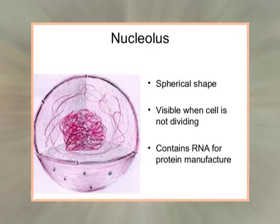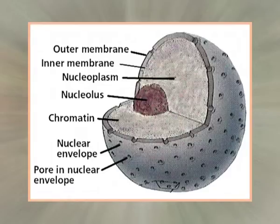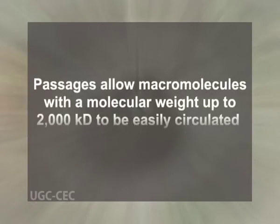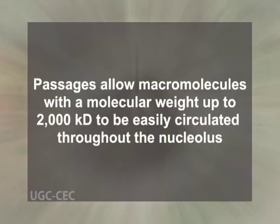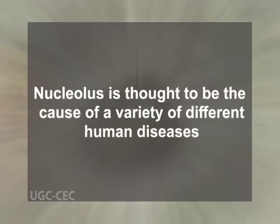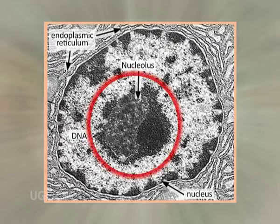Its main function is to synthesize ribosomal RNA, also known as rRNA, and combine it with proteins, resulting in the formation of complete ribosomes. There is an uninterrupted chain between the nucleoplasm and the interior parts of the Nucleolus through a system of nucleolar passages. These passages allow macromolecules with a molecular weight up to 2000 kDa to be easily circulated throughout the Nucleolus. Due to its close relationship with chromosomal matter and its important role in producing ribosomes, the Nucleolus is thought to be involved in a variety of different human diseases.